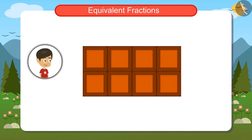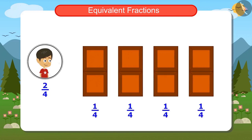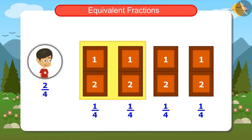Now we have to see how many pieces Rayamsh will get. Mummy said that he will get two fourths of this chocolate. That is, if you make four equal parts, he will get two parts. If you make four equal parts of this chocolate, there will be two pieces in each part. So from two of these four parts, he will get four pieces.